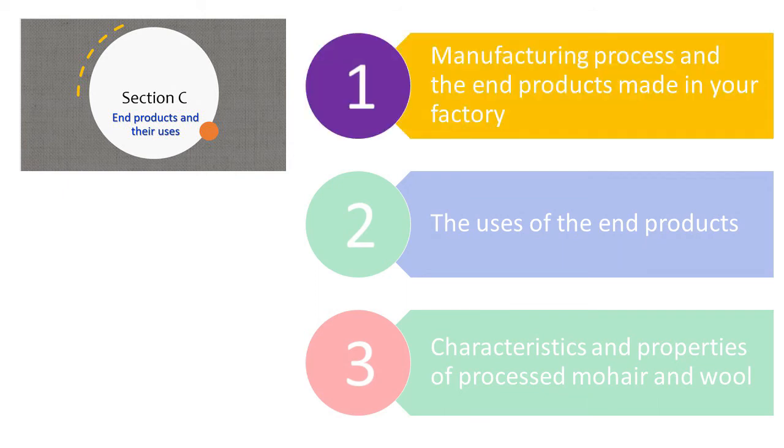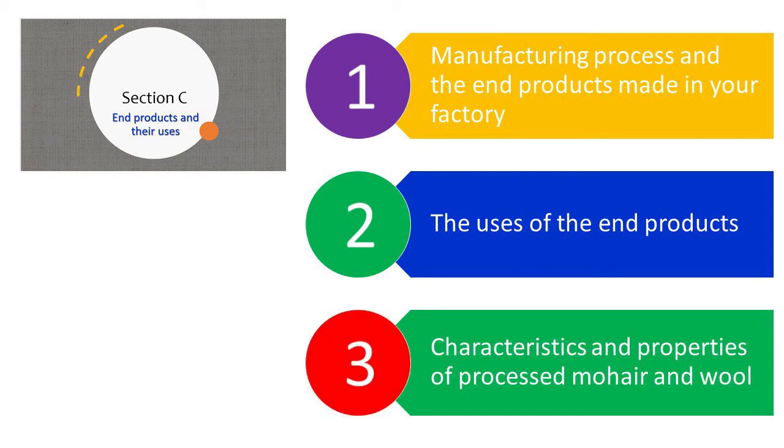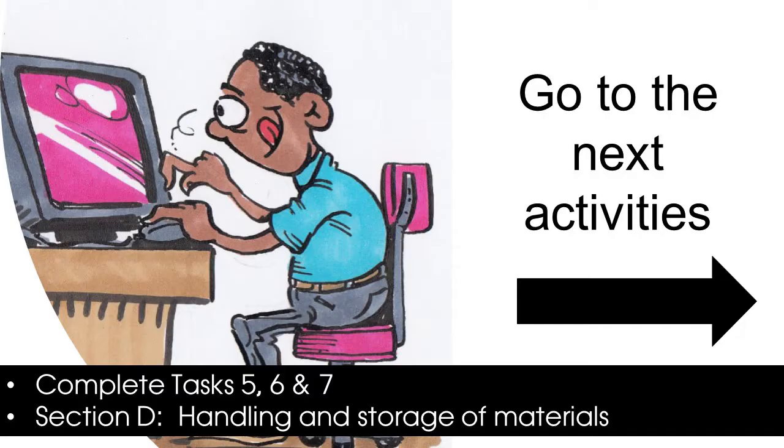In this section, we looked at the manufacturing processes and the end products made in your factory, the uses of the end mohair and wool products and what consumers expect from these products, and the characteristics and properties of processed mohair and wool. We have now reached the end of Section C.